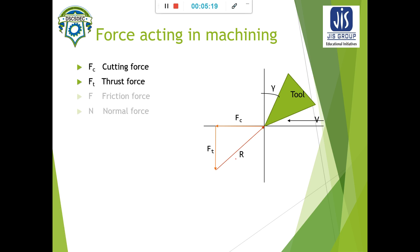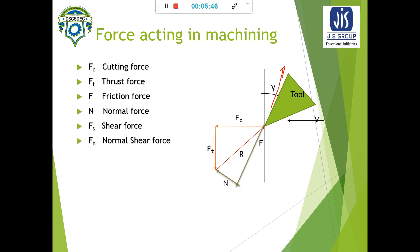Another set of forces arises due to chip flow. The friction between the chip and the tool gives a friction force F, and normal to that is the normal force N. The resultant of this friction force and normal force has the same magnitude R, but a different direction. These two forces — friction force F and normal force N — are known as tool plane forces.